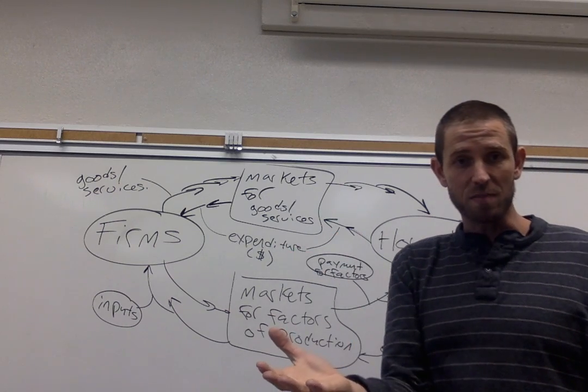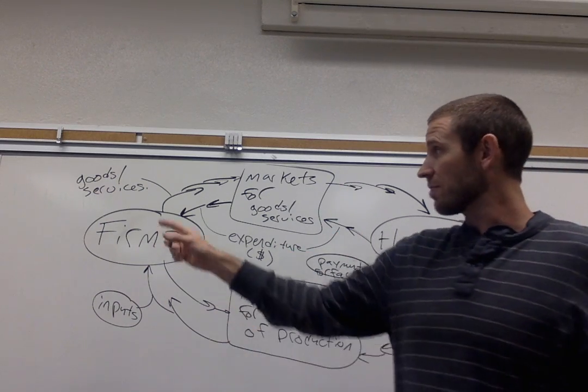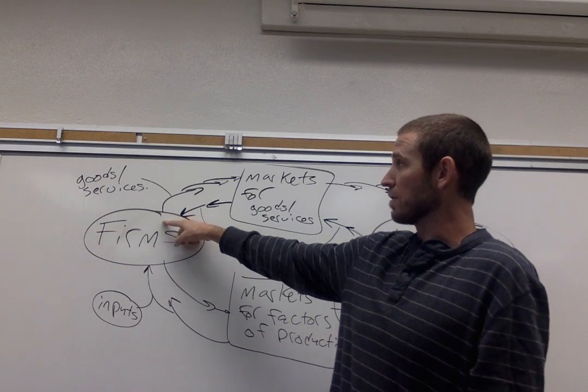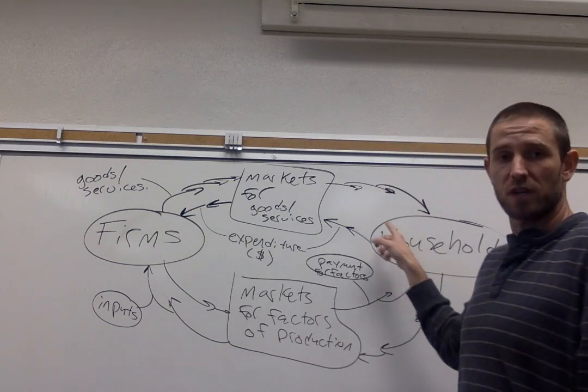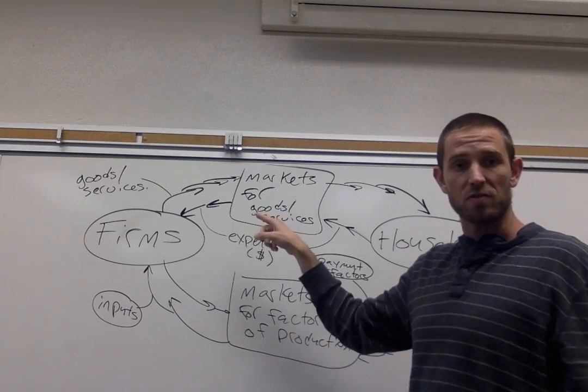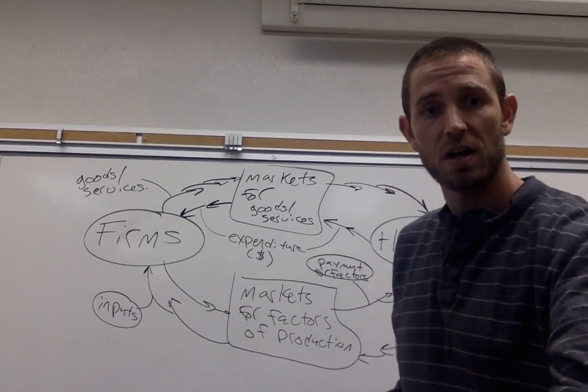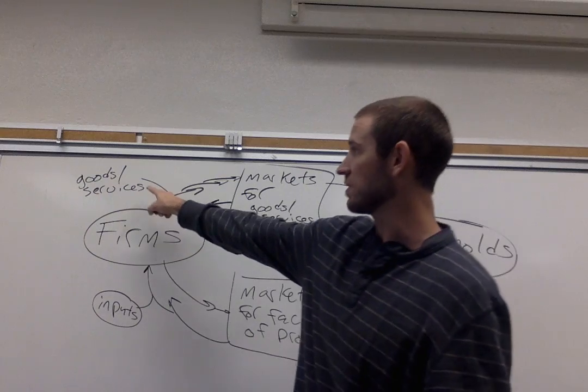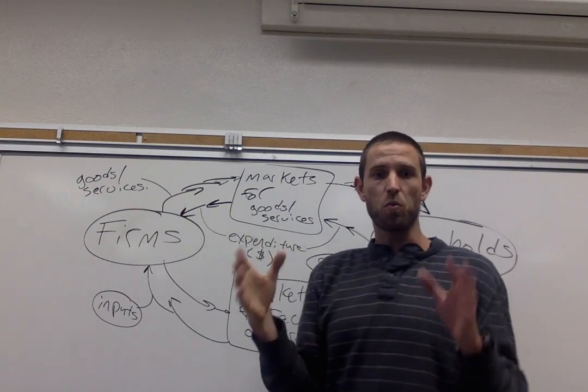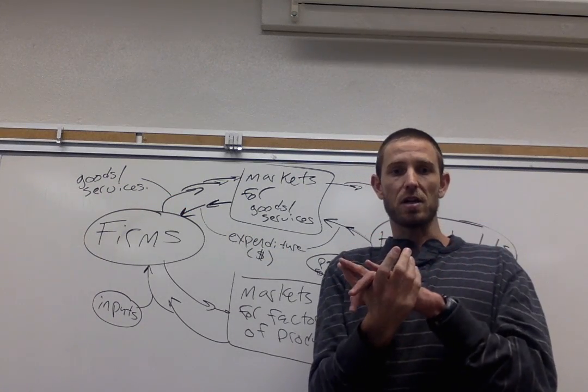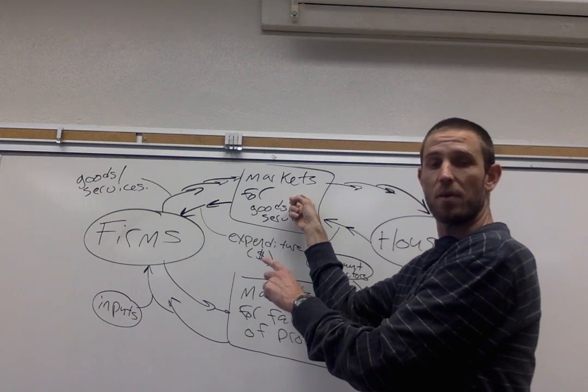We don't give businesses money for nothing. We want something coming back. So coming back from firms to households, again through the channel of these product markets or markets for goods and services, are going to be all those things that we buy. These are goods and services. So that's one interaction that we see in market economies occurring up here through this top market.